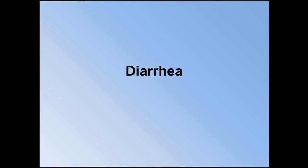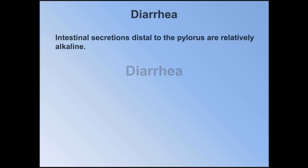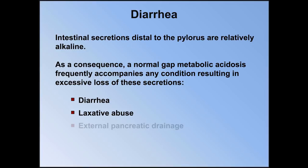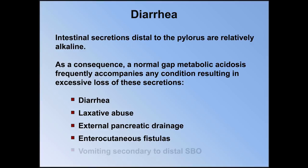Another major cause of a normal anion gap acidosis is diarrhea. Intestinal secretions distal to the pylorus, including those from the pancreatic duct, are relatively alkaline. As a consequence, a normal gap acidosis frequently accompanies any condition resulting in excessive loss of these secretions. This most commonly occurs with diarrhea, but can also be seen with laxative abuse, external pancreatic drainage, an enterocutaneous fistula, and vomiting secondary to a distal small bowel obstruction in which the vomited bicarbonate from intestinal secretions can outweigh the vomited hydrogen ions in stomach acid.